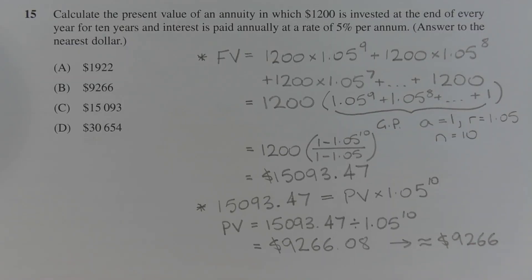The first thing I'm going to do is consider the future value of the annuity. Now $1,200 is invested at the end of each year, not at the start. That means that the first contribution of $1,200 is actually going to sit in the bank for 9 years, not 10.